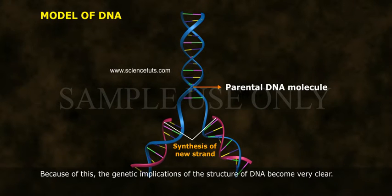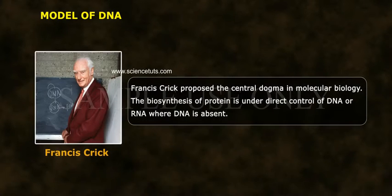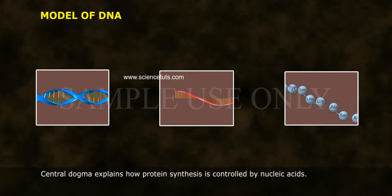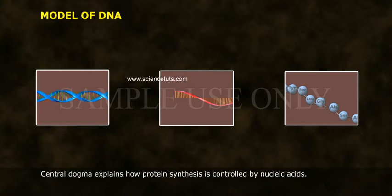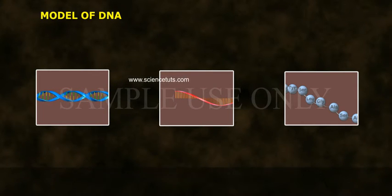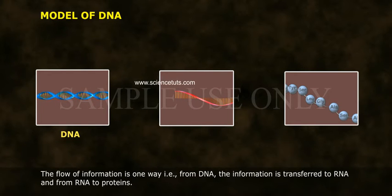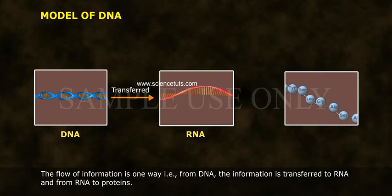Francis Crick proposed the central dogma in molecular biology: the biosynthesis of protein is under direct control of DNA, or RNA where DNA is absent. The central dogma explains how protein synthesis is controlled by nucleic acid. The flow of information is one way — from DNA, information is transferred to RNA, and from RNA